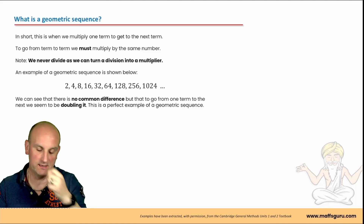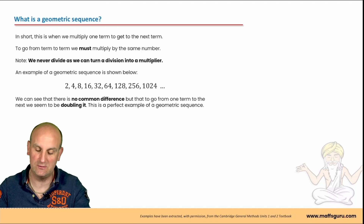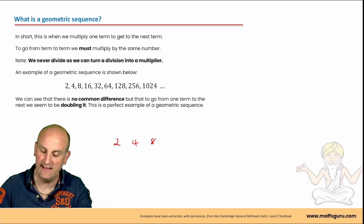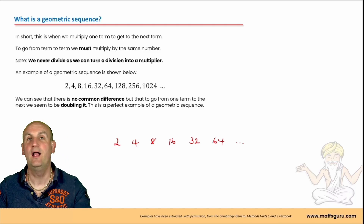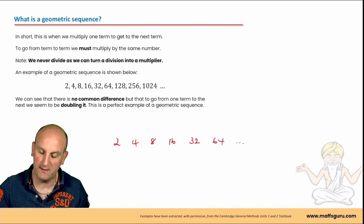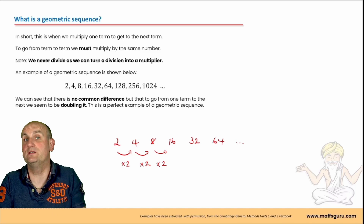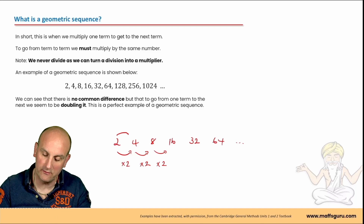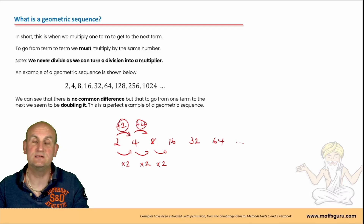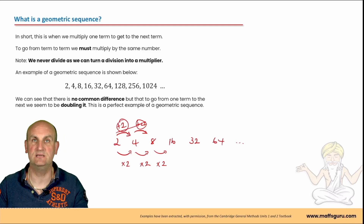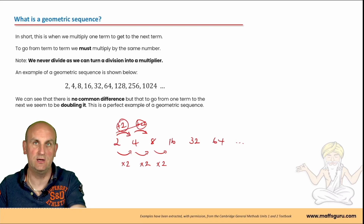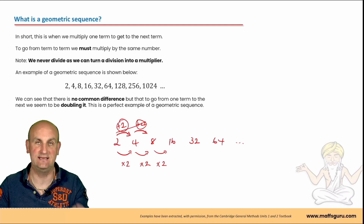We always just multiply. Looking at the sequence 2, 4, 8, 16, 32, 64 — that is a geometric sequence because to go from term to term I'm multiplying by two each time. Now you might check if it's arithmetic: there's plus two there, but plus four for the next gap. Because those differences are different, it cannot be an arithmetic sequence. For a sequence to be arithmetic or geometric, what you do from term to term must be exactly the same.